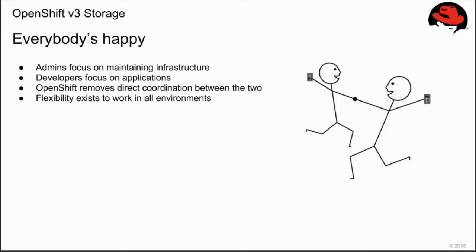Can you take us through it more step-by-step verbally? If I'm an admin, I know how to get storage from my array, be it an iSCSI volume or a Fibre Channel attached volume. I'd make that phone call and say give me 50 ten-gigabyte volumes, and I'd get that pool associated to me. What's my next step in the OpenShift platform? How do I use those? Well, there are a number of ways to do that. All volumes are created with the API.